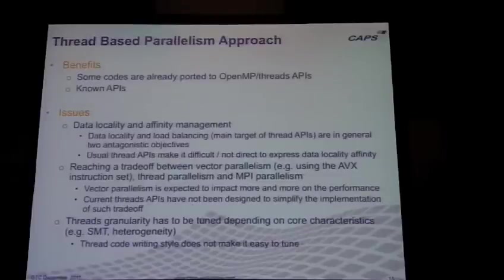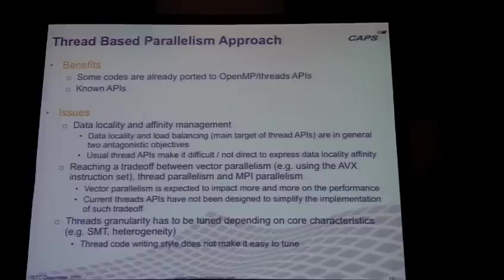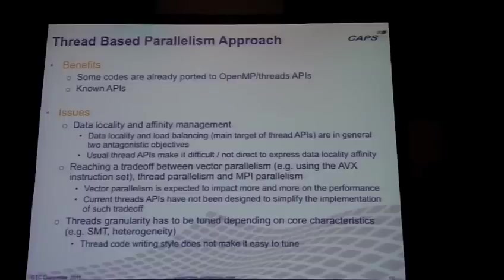Let's consider thread-based parallelism as used in OpenMP or thread APIs. There are a lot of advantages — we already have codes based on that. This is a much better way of going to manycore. However, you still have problems with data locality and affinity. As these problems get more and more important, the fact that current thread packages cannot manage locality is going to be an issue.